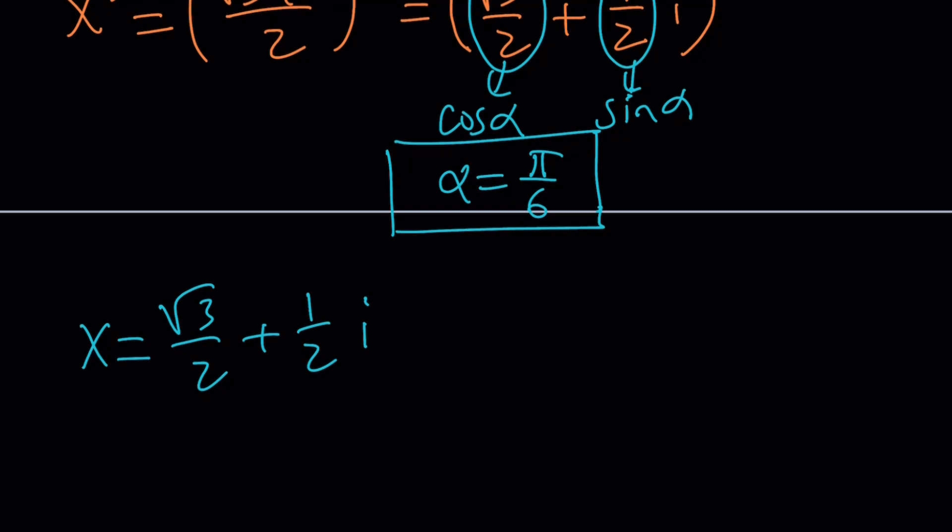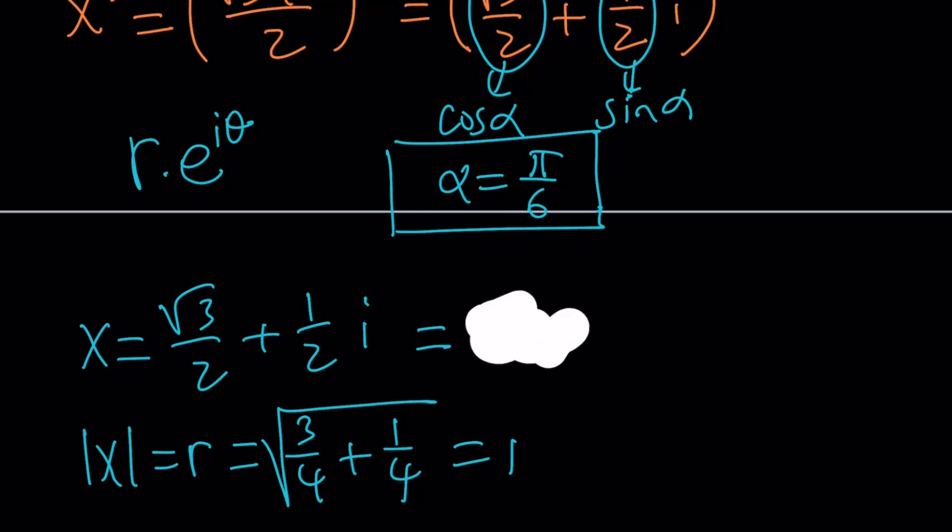Now we can write it as follows. Look at the absolute value of x, which is also called the modulus or r. This is going to be root 3 over 2 squared, 3 over 4 plus 1 over 4. And underneath the radical, that's going to be 1. So that's going to be multiplied by 1 and then multiplied by e to the power i theta. r is 1, so we don't even have to worry about it. Let's just write e to the power i times pi over 6.